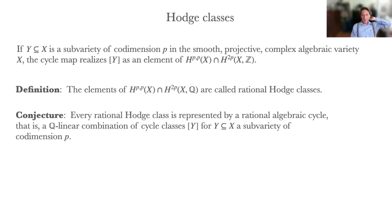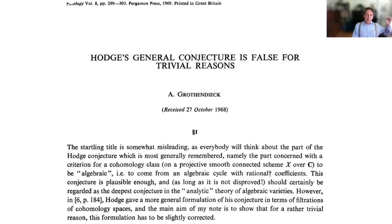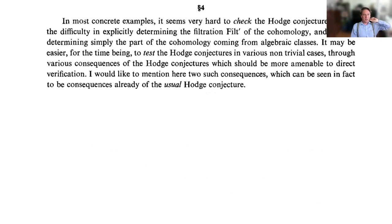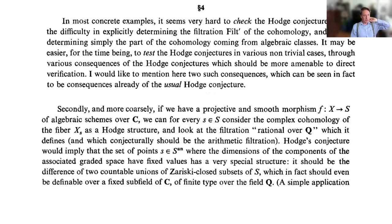That's the conjecture — we're not going to prove it. Grothendieck wrote a paper in English saying that 'Hodge's general conjecture is false for trivial reasons' — he's not actually showing that specific form is false but rather some generalization. In that paper, he suggested two consequences of the Hodge conjecture which you might be able to prove and which would be interesting to study. One of these is basically what we call the Hodge locus — it would have to be algebraic.